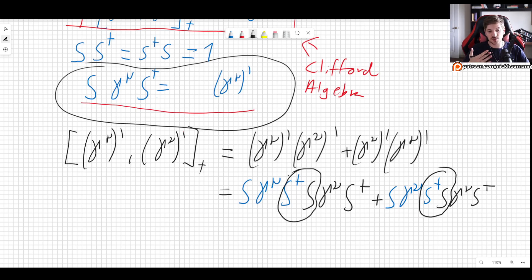But notice that we have S dagger S, S dagger S. And we know that these transformations are unitary as transformations have to be so that they don't end up changing the physics. So these things are simply one. We can get rid of them.